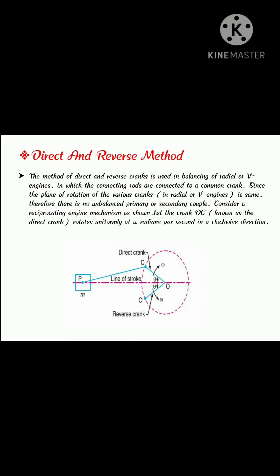therefore there is no unbalanced primary or secondary couple. Consider a reciprocating engine mechanism as shown in figure. Let the crank Oc, known as the direct crank, rotates uniformly at omega radians per second in the clockwise direction as shown in figure.